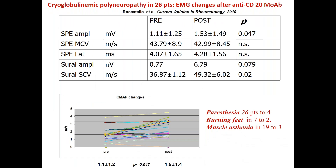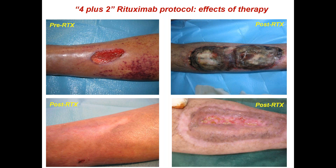The 29 patients in this cohort had severe polyneuropathy; previous treatments included corticosteroids, immunosuppressants, plasma exchange, and antivirals. Paresthesia were present in 26, seven had burning feet, and muscle asthenia was present in 19. After rituximab treatment, these figures fell to 4, 2, and 3 respectively. Significant improvement was also found at electromyography, detecting sensory nerve conduction velocity, amplitude, and compound muscle action potential. The effects on skin ulcers were impressive as well.